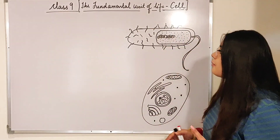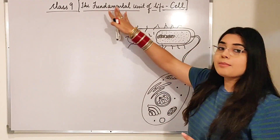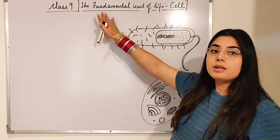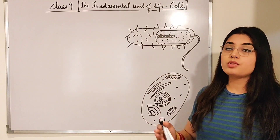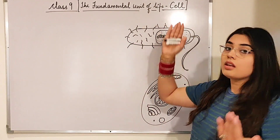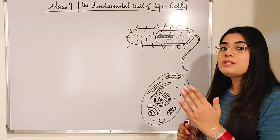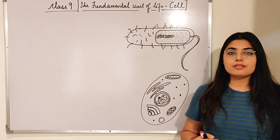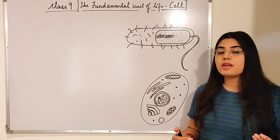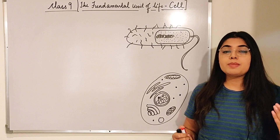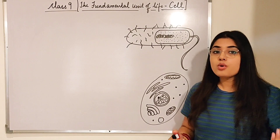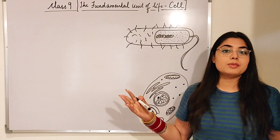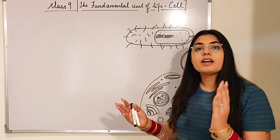Let's get started with the name of the chapter: 'The Fundamental Unit of Life', which is the cell. What is the meaning of 'fundamental unit of life'? Fundamental means very, very important — something that is playing a major role, without which nothing will be possible.